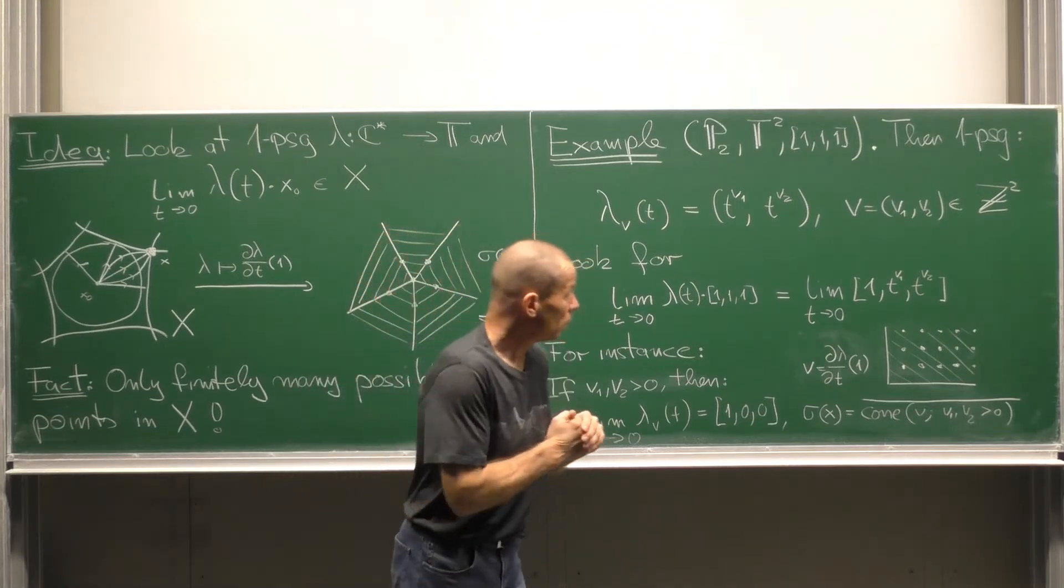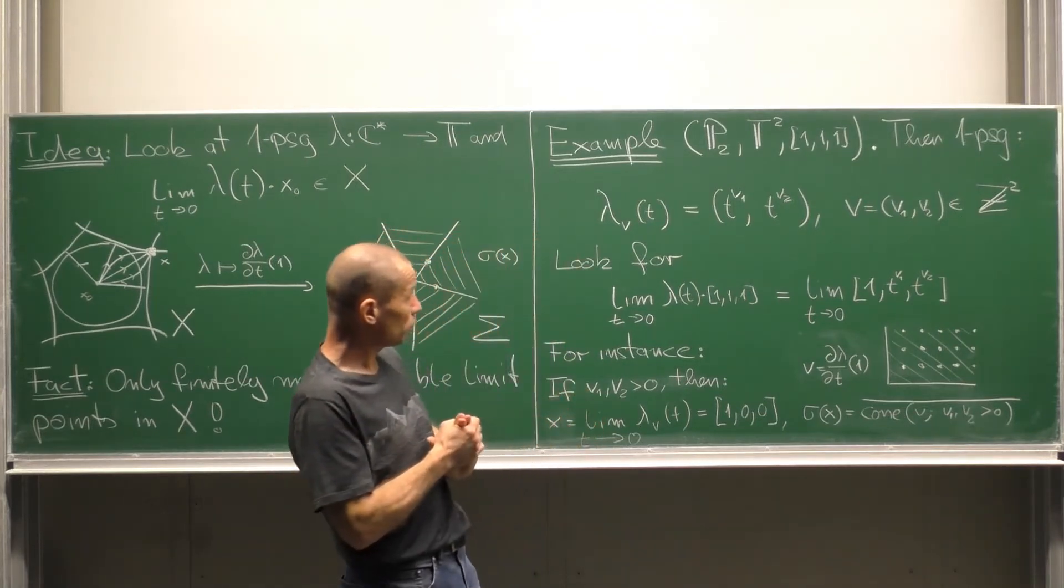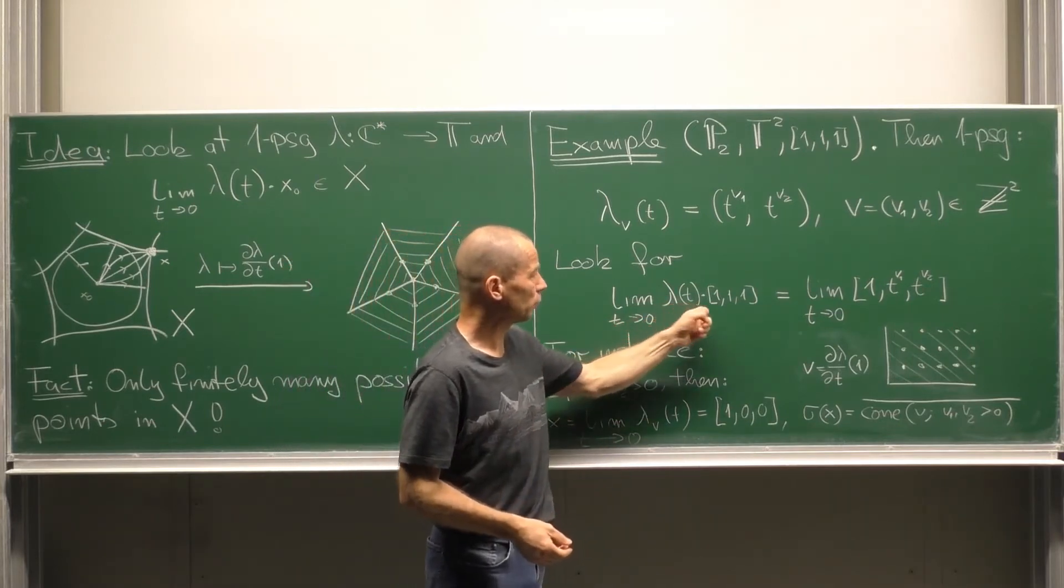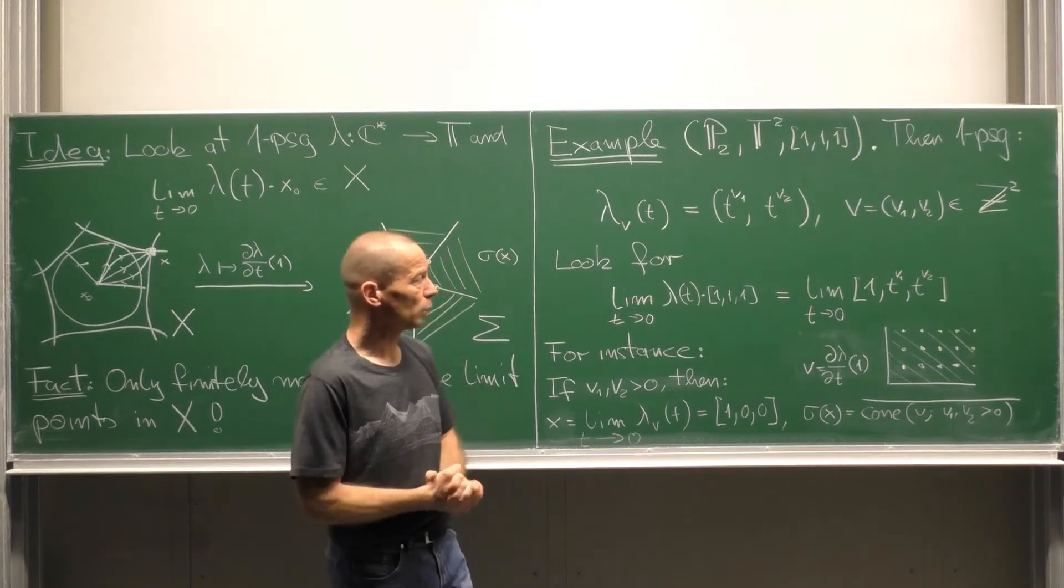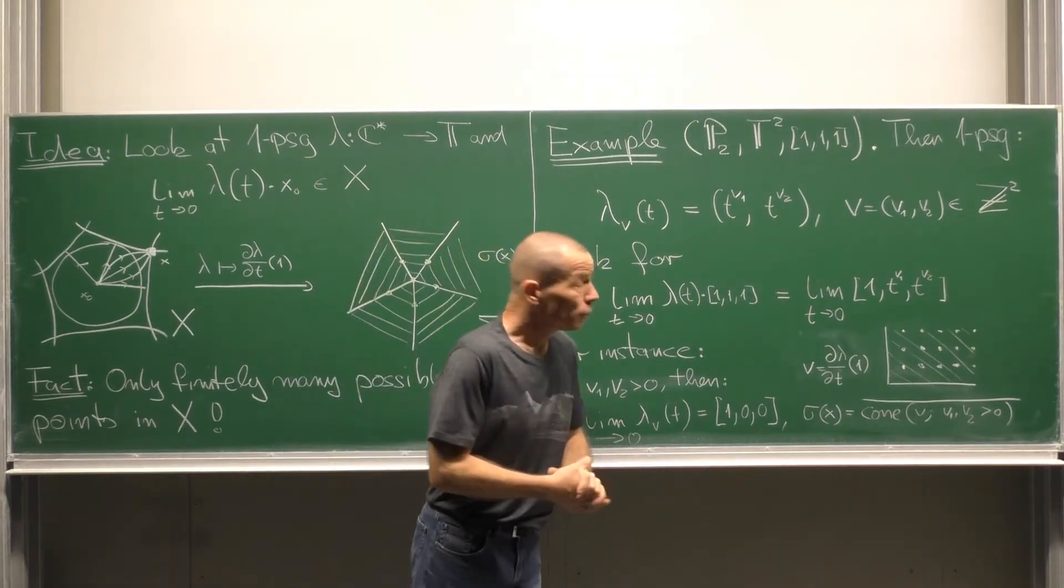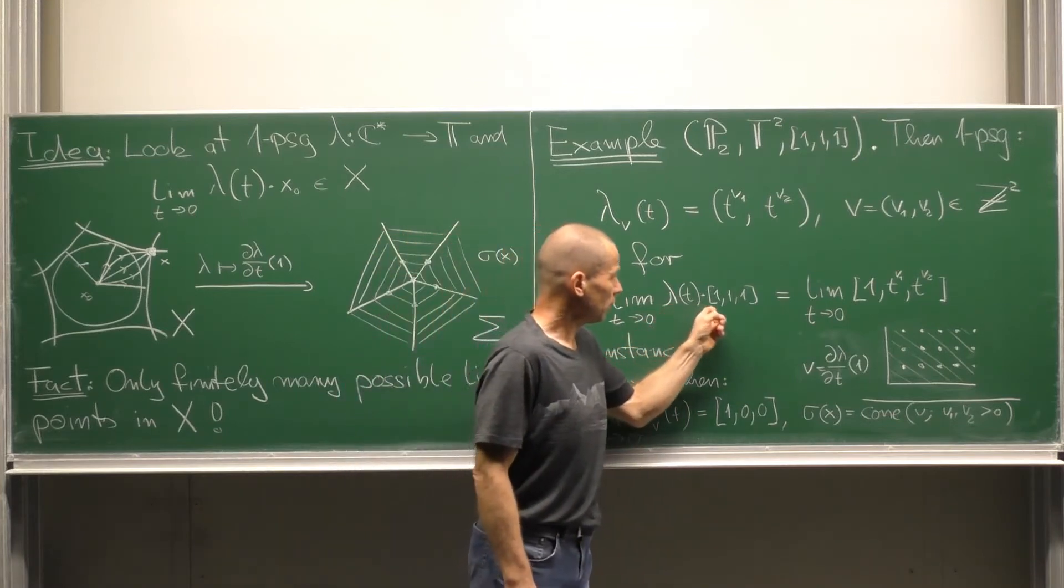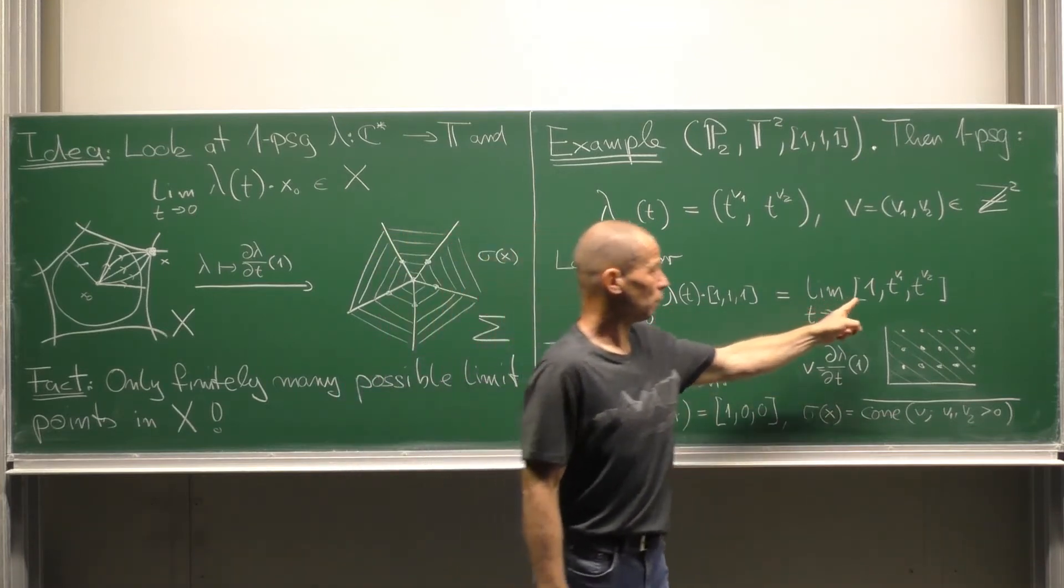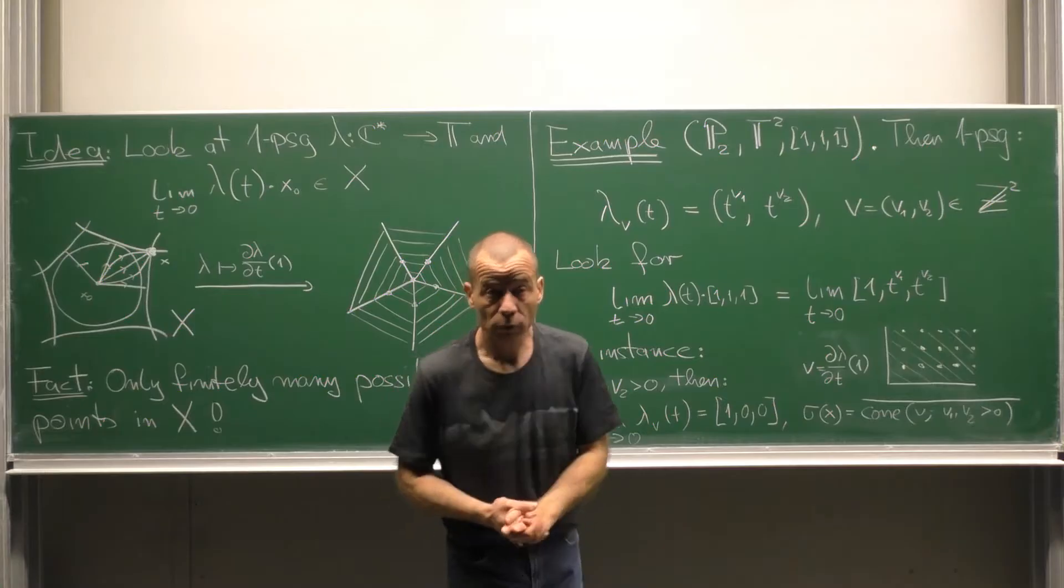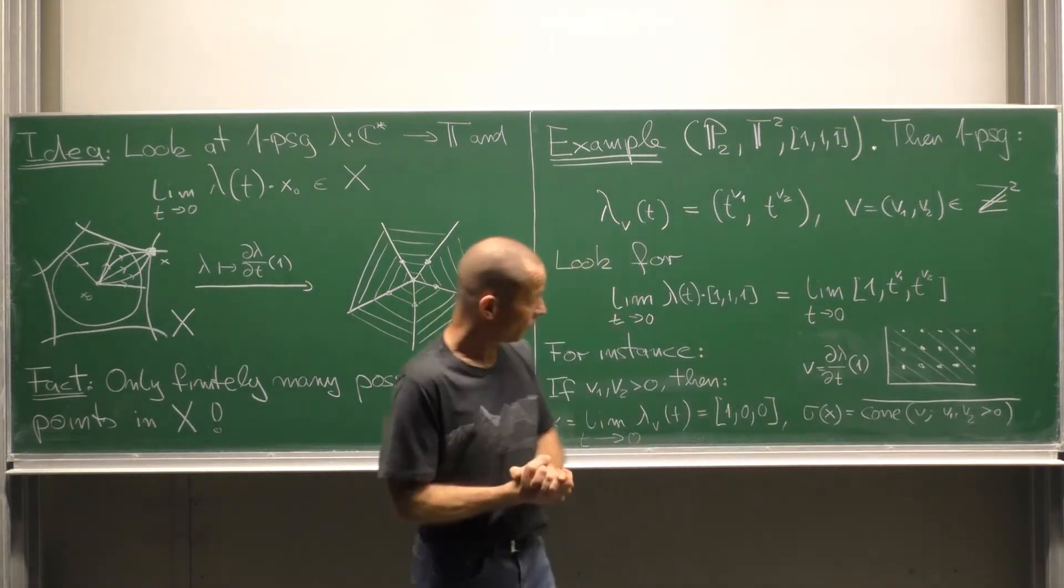Now we have to care about the limits of these one parameter subgroups. That means limit T tends to zero lambda of T applied to the base point 1,1,1. And by the definition of the action of T, lambda of T times 1,1,1 is 1, T to the V1, T to the V2. And now we have to study what happens if T tends to zero.